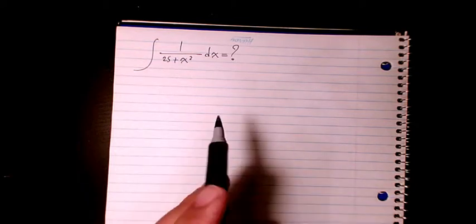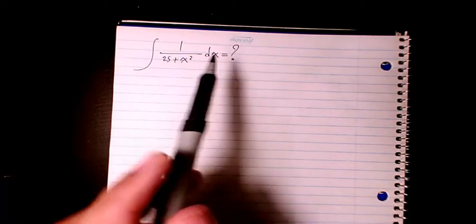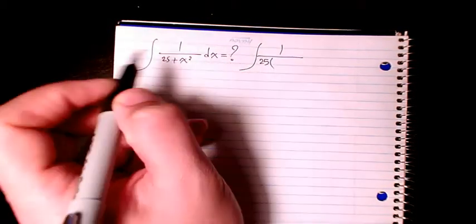What's up guys, this is Masi. Welcome to my channel. This video I want to do integration of 1 over 25 plus x squared dx. First thing I need to do is factor 25 from the denominator, so it will be 1 plus x squared divided by 25 dx.